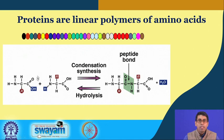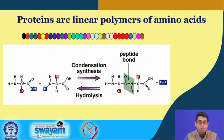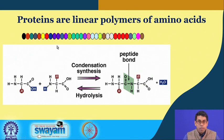Proteins are linear polymers made of amino acids. This is the basic structure of an amino acid, which has two functional groups: the amine group and the carboxylic group. It also has a hydrogen atom and an R group, which is the side chain. There are 20 amino acids in a natural protein, and this R group is the one that differs between these 20 amino acids. The linear polymer of amino acids is formed by a condensation reaction where the carboxylic group of one amino acid reacts with the amino group of another.